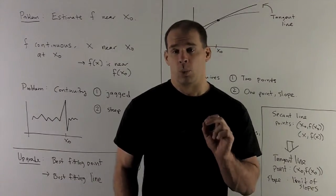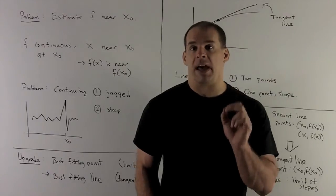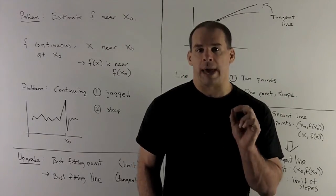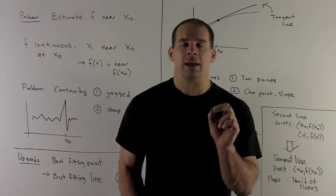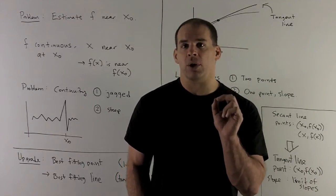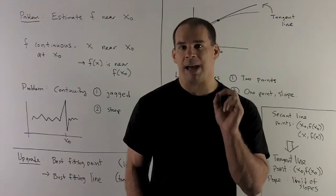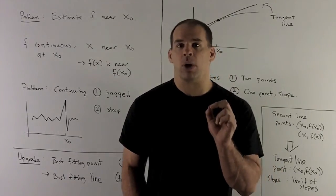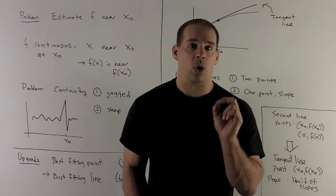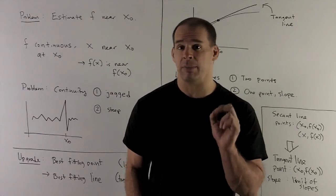So we want to try to upgrade continuity to something else. So what's our plan? Well, if you notice, what did we do with continuity? The business of continuity is trying to find your best fitting point to the graph. So instead of looking at a point, why don't we try to marry a whole line to our graph at a given point?